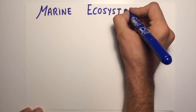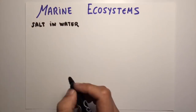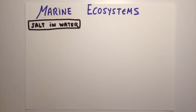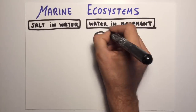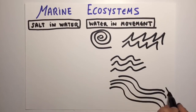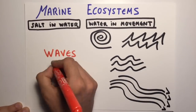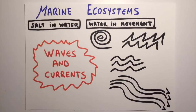Marine ecosystems, also called saltwater ecosystems, have a high salinity. Water in these ecosystems is in constant movement due to waves and currents.